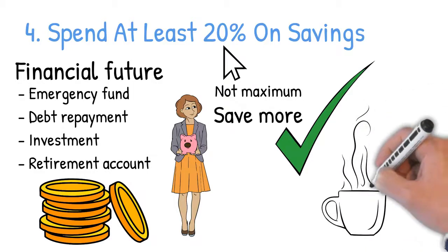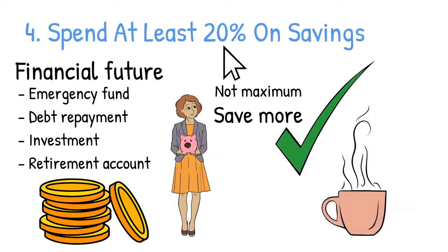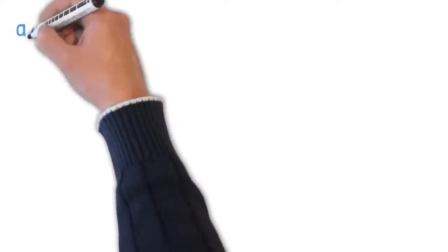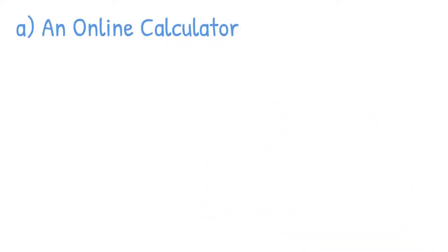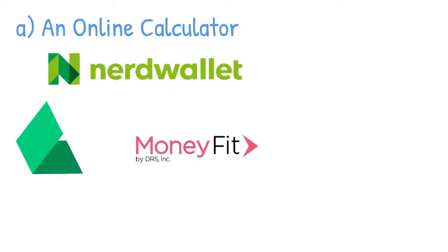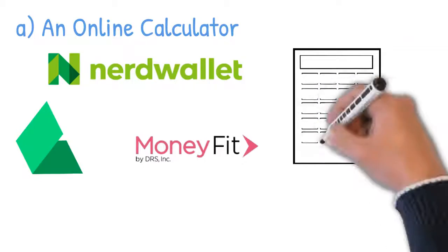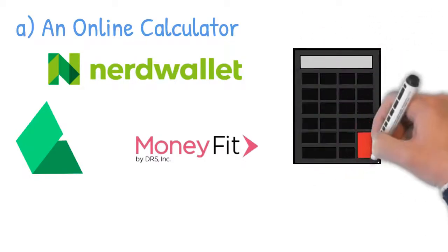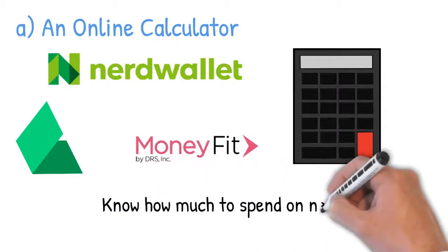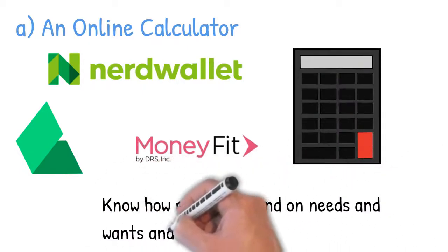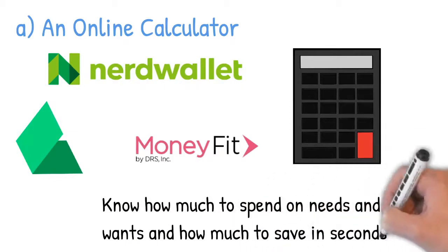The 50-30-20 rule made easy, your options. Perhaps doing the complex calculations is not your cup of tea. So consider easy ways of applying the 50-30-20 rule. I recommend the following options. A: An online calculator. Platforms like NerdWallet, The Modest Wallet, and MoneyFit have an online calculator for 50-30-20. So all you have to do is key in your after-tax income, and the online calculator will take care of the rest. You know how much to spend in seconds on needs and wants, and how much to save. So your only task is to determine your after-tax income, as I explained earlier.